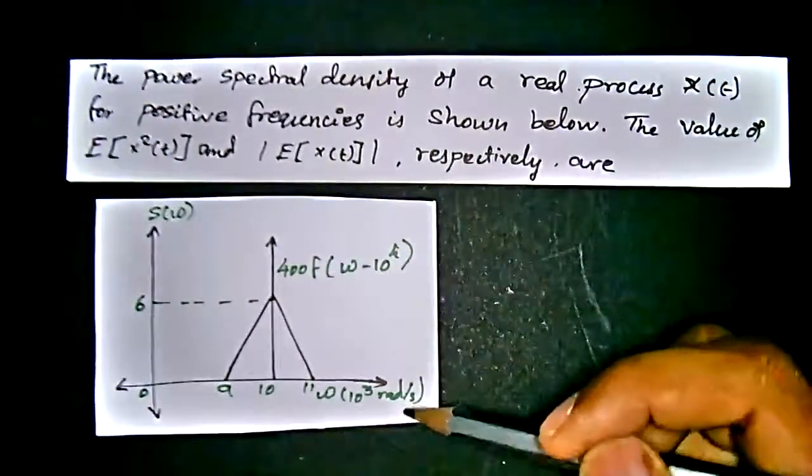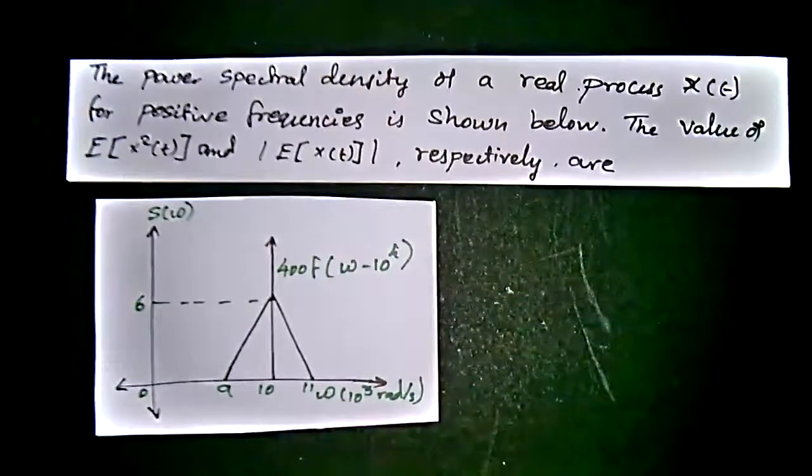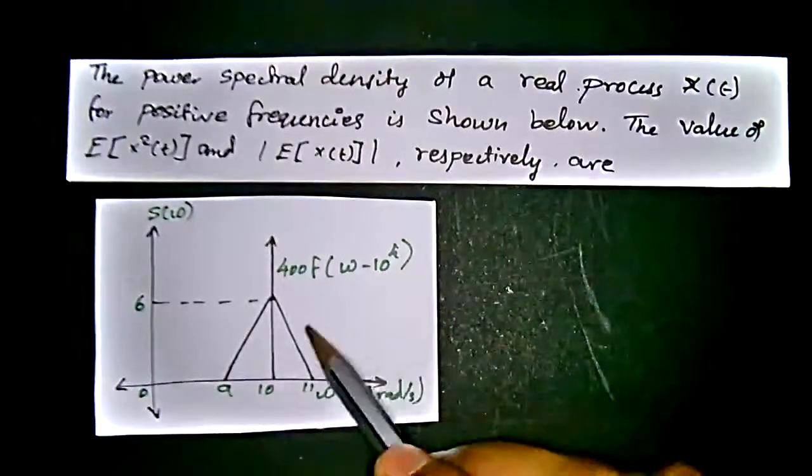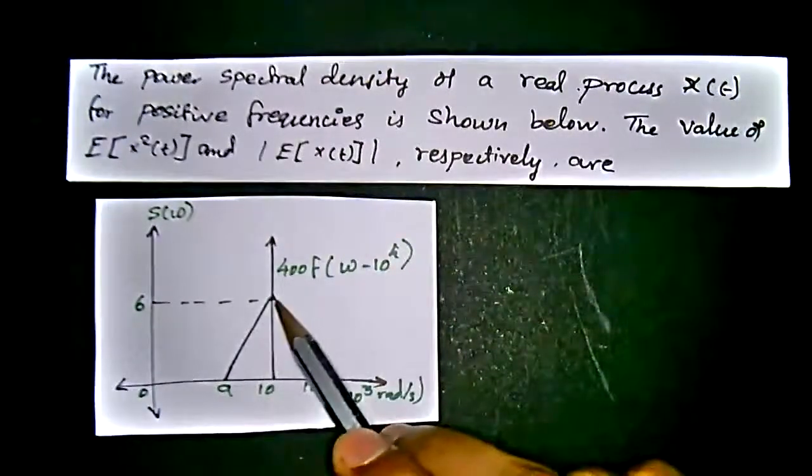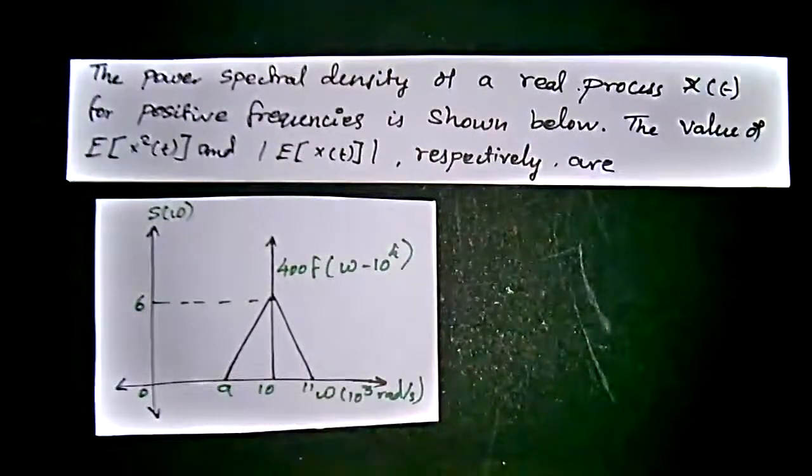But we have to set the signals and systems mindset and should go for the random process method. Here we have the amplitude of 6 and the radians, those kind of things.